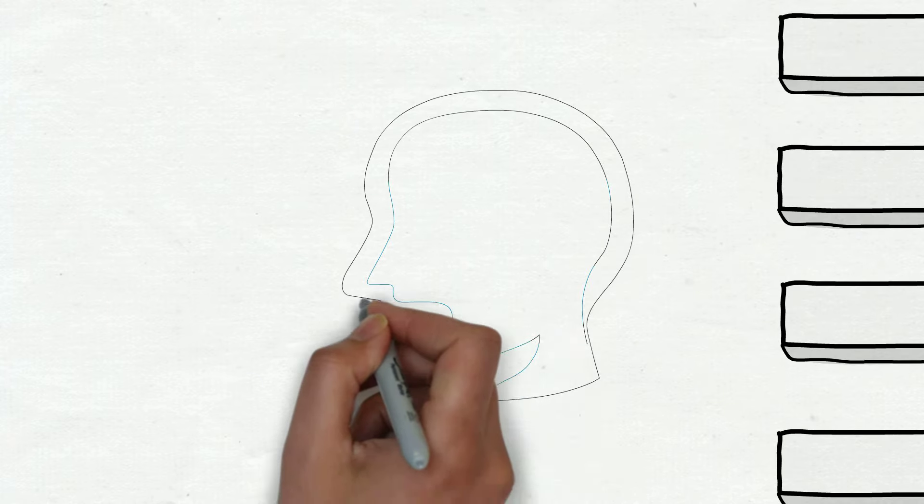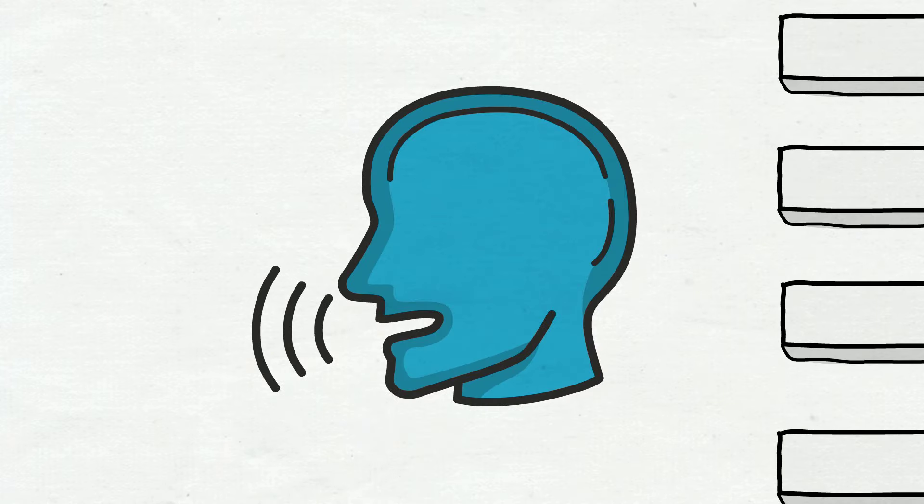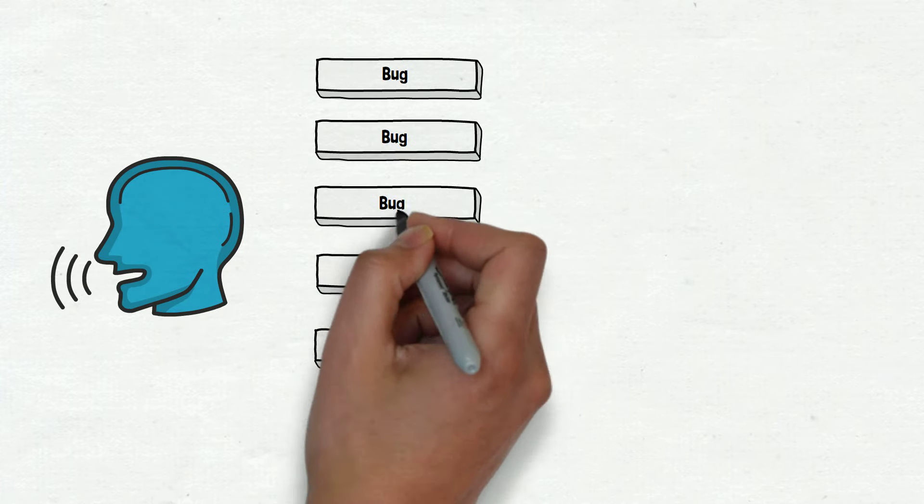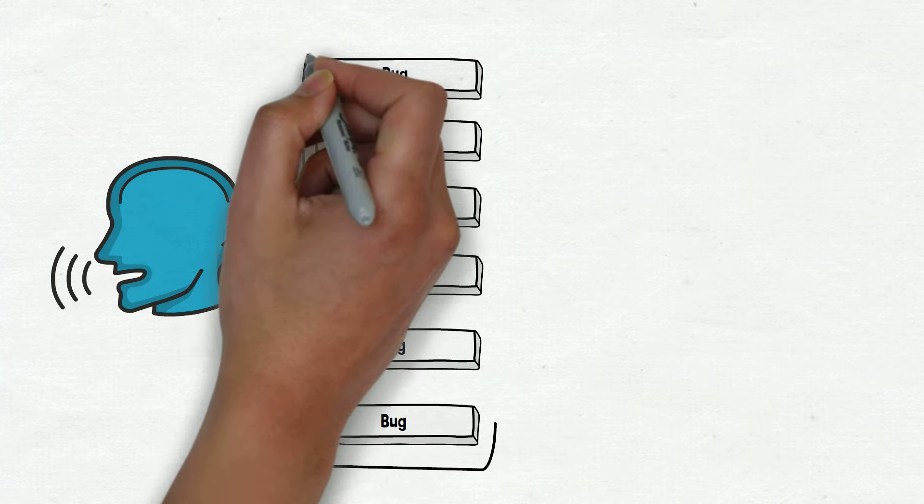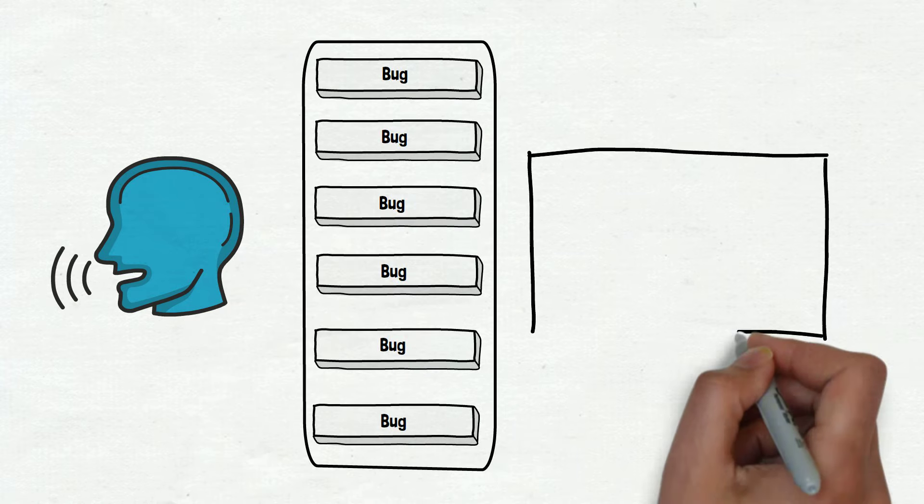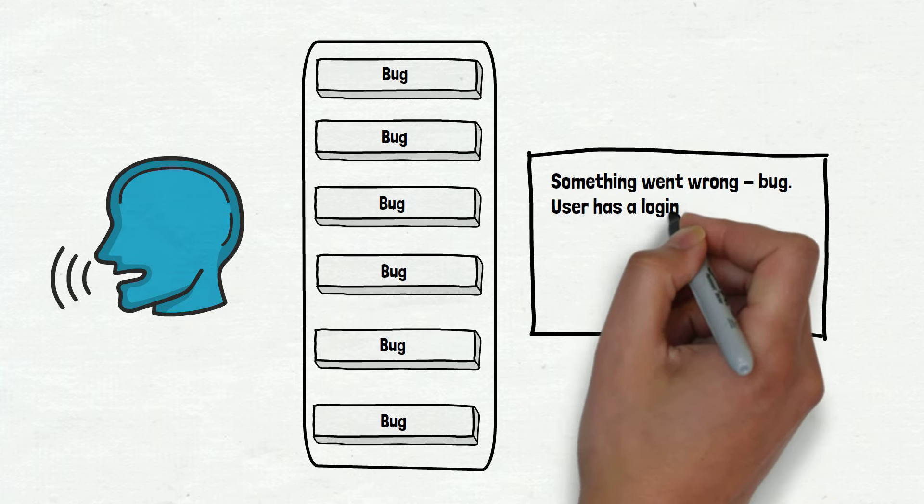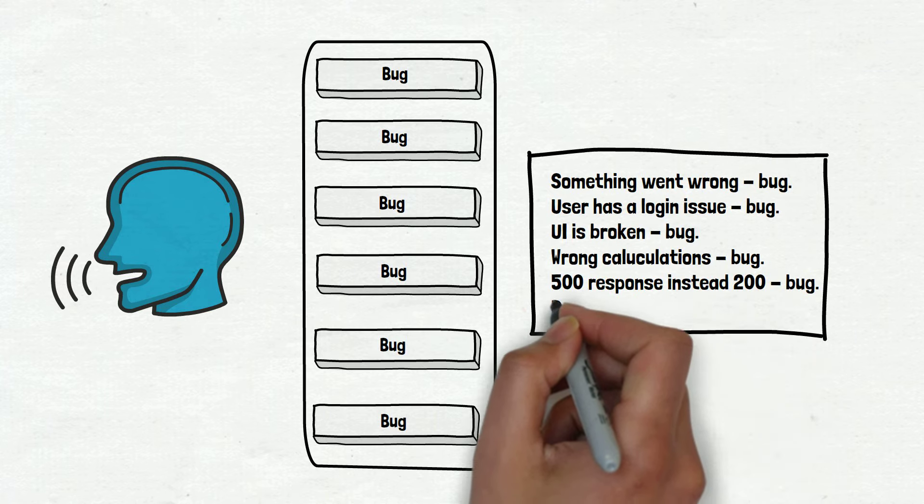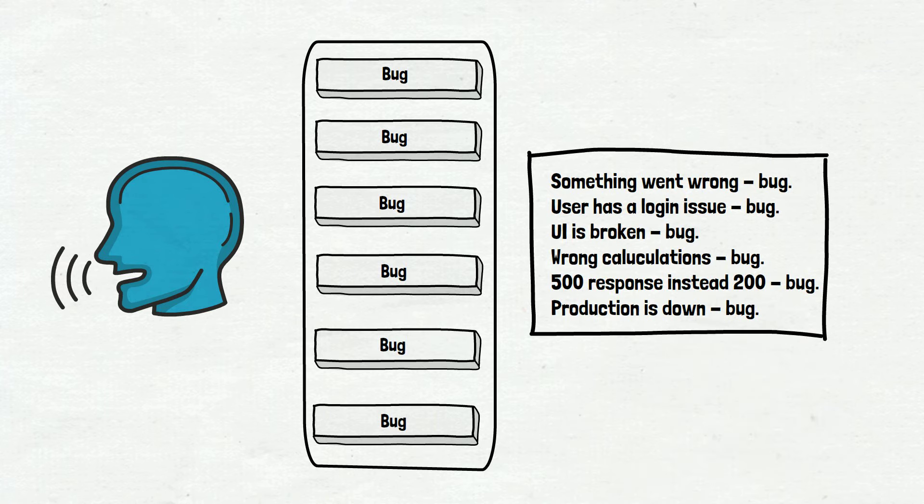Let's move to human language for now and compare how these words are used in reality. I need to be honest with you: In reality, most people don't use these words. People use the word bug everywhere. Something went wrong? Bug. The user has a login issue? Bug. Production is down? Bug. If anything goes wrong, it is a bug. Nobody uses fancy words.